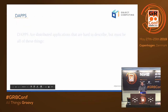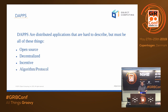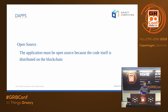Let's talk about dApps — distributed applications. They're really hard to describe exactly. To officially be a dApp it must have all of these things: it needs to be open, it needs to be decentralized, it needs to pay some sort of incentive for handling it, and it's got to be run by some sort of protocol or algorithm. One important thing — the code itself is distributed in the blockchain, so anyone can see that code. You're not supposed to put secret things in a dApp because everyone has a copy of it. People have done silly things like this and lost money.